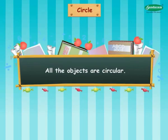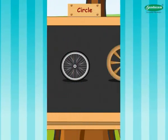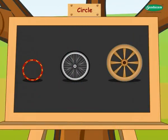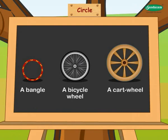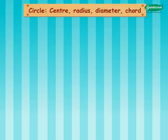All these objects are circular: a bangle, a bicycle wheel, a cart wheel. Circle, center, radius, diameter, chord.